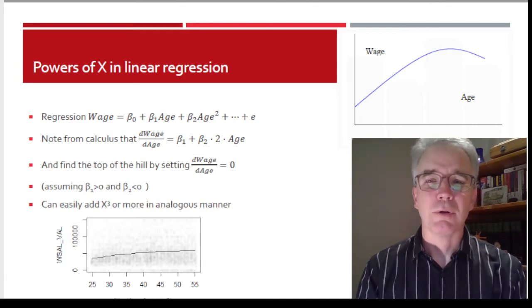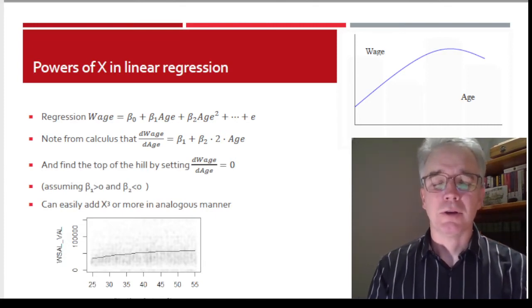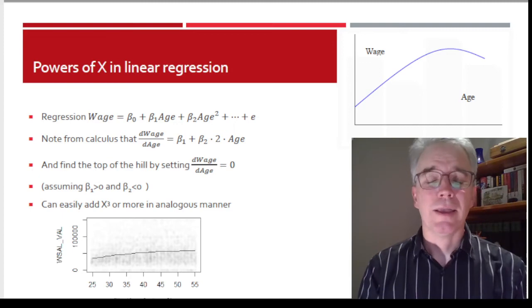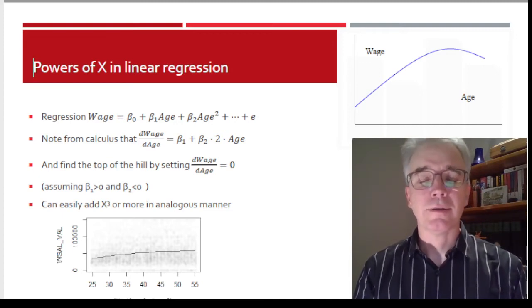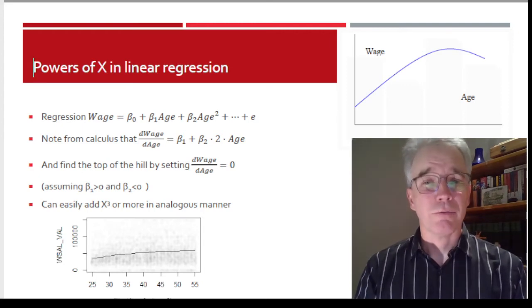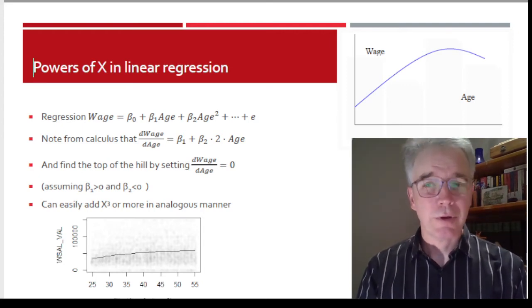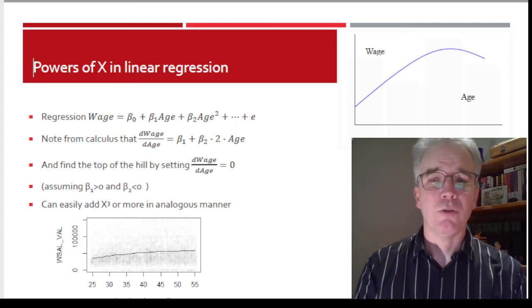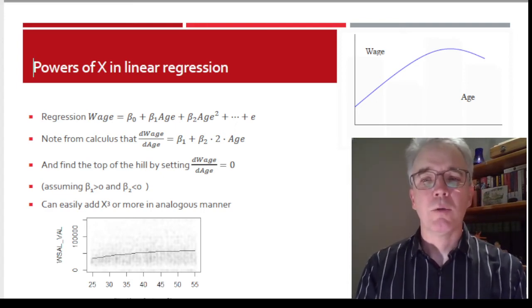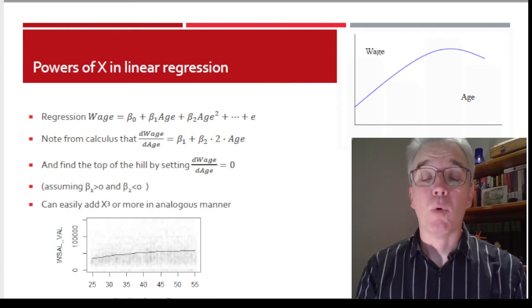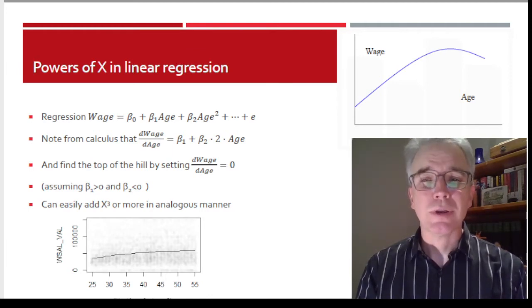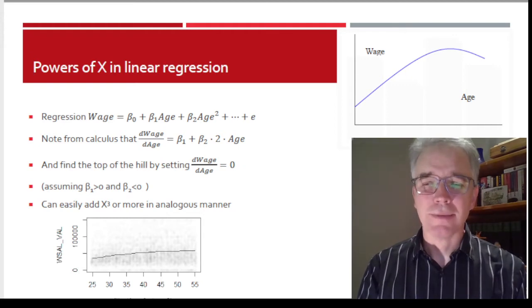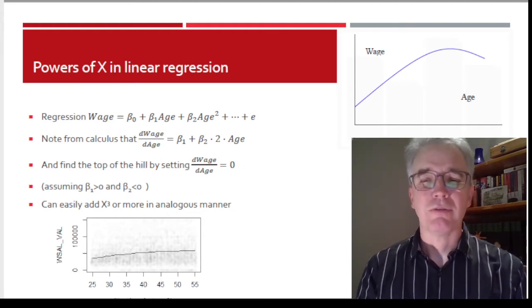So if I regress wage on β₀ + β₁X + β₂X² plus maybe some other stuff plus my error term, now remember your calculus class. How do I find dWage/dAge? Well, you take the derivative with respect to age. That's going to be β₁ + β₂ · 2 · Age. That's the first derivative of that parabola.